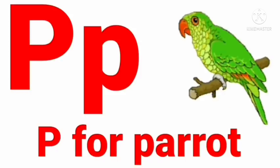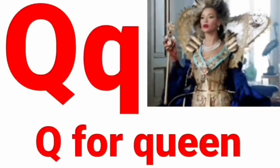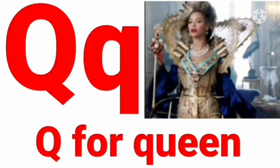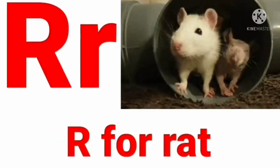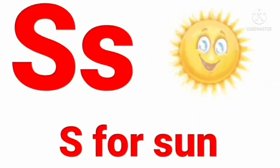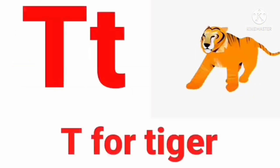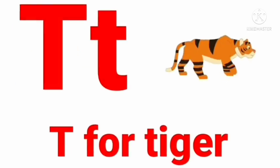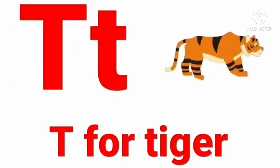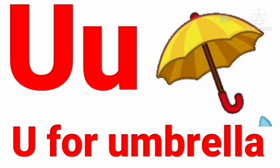P for parrot, Q for queen, R for red, S for sun, T for tiger, U for umbrella.